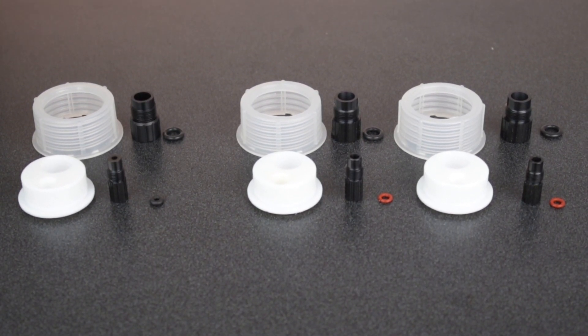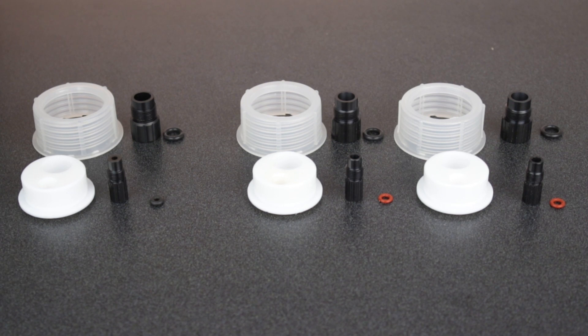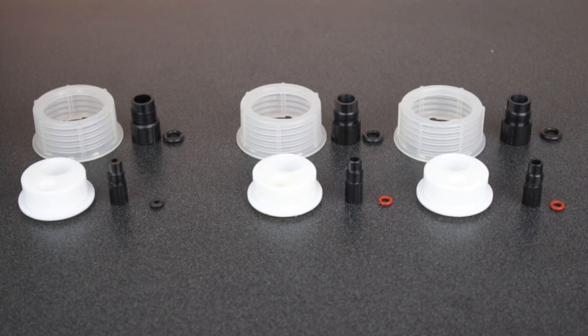For the titrant bottle, the O-ring for the tube fitting is black. For the solvent and waste bottles, the O-rings are red. The two bottle tops are also packaged separately. You can identify the titrant top as it is not packaged with the tubing.